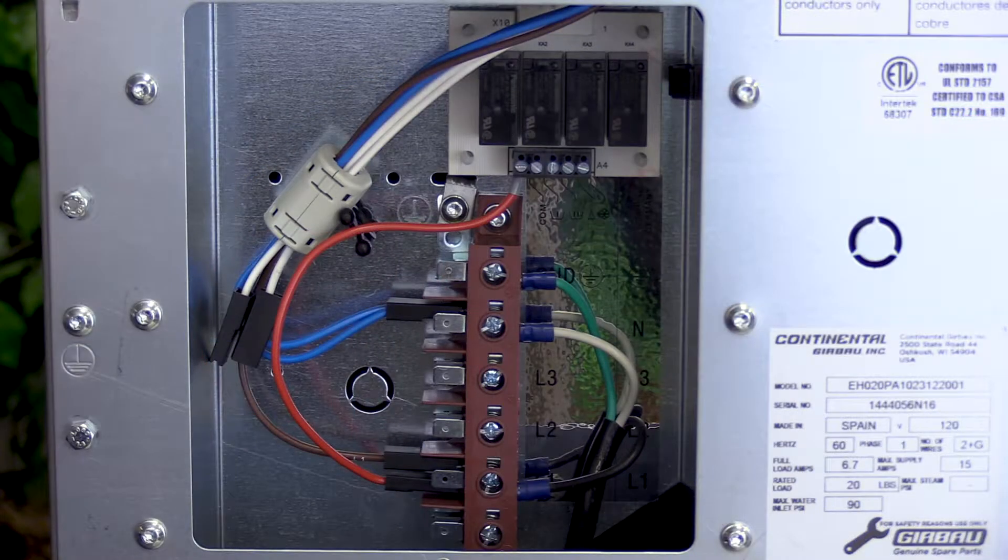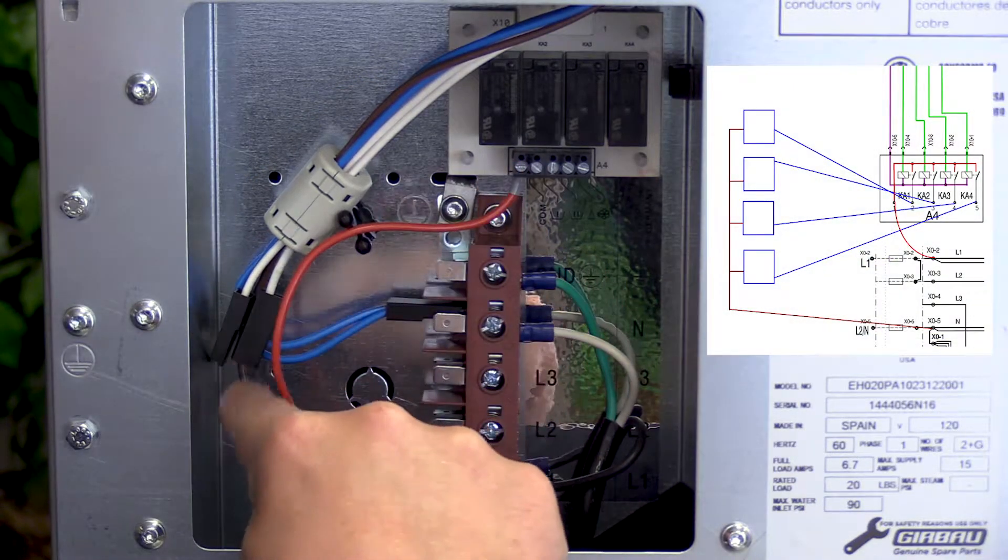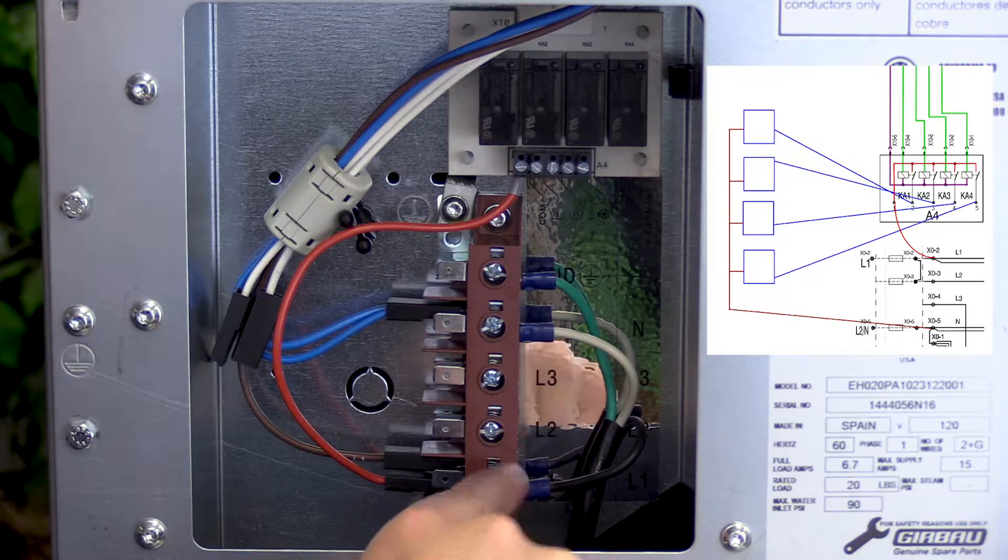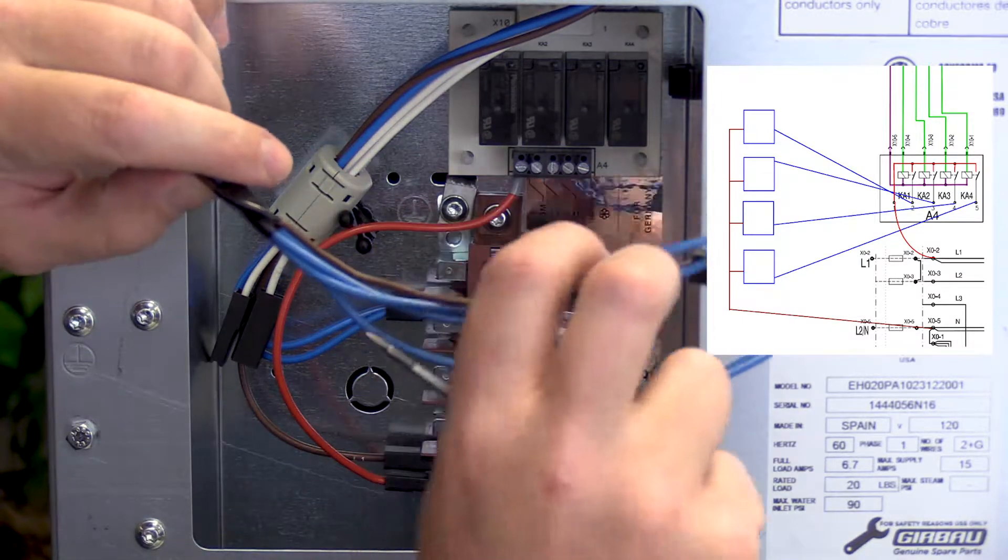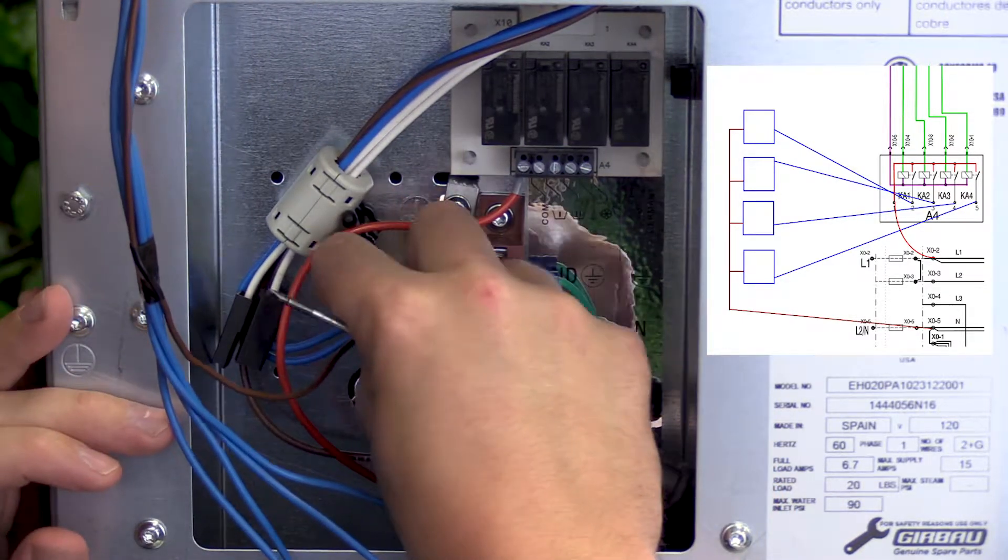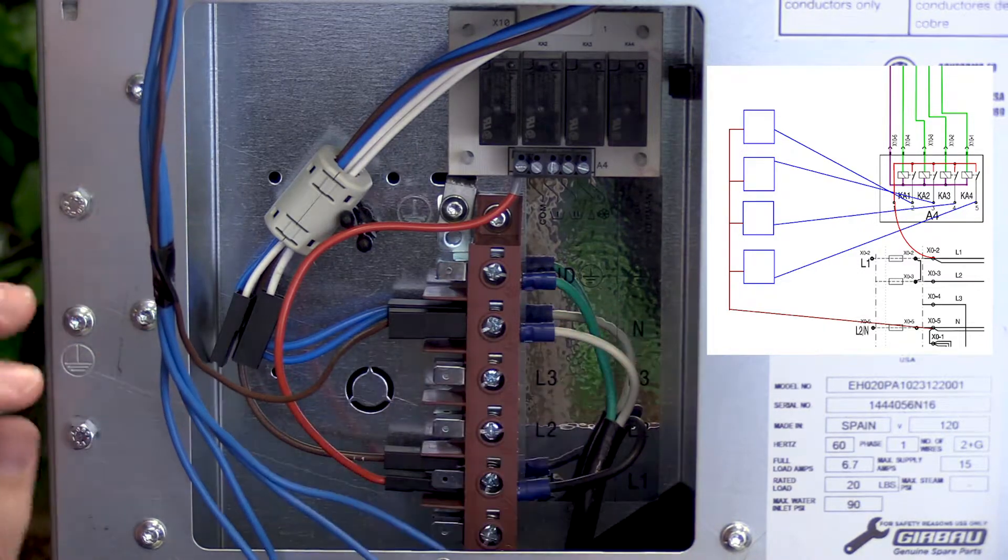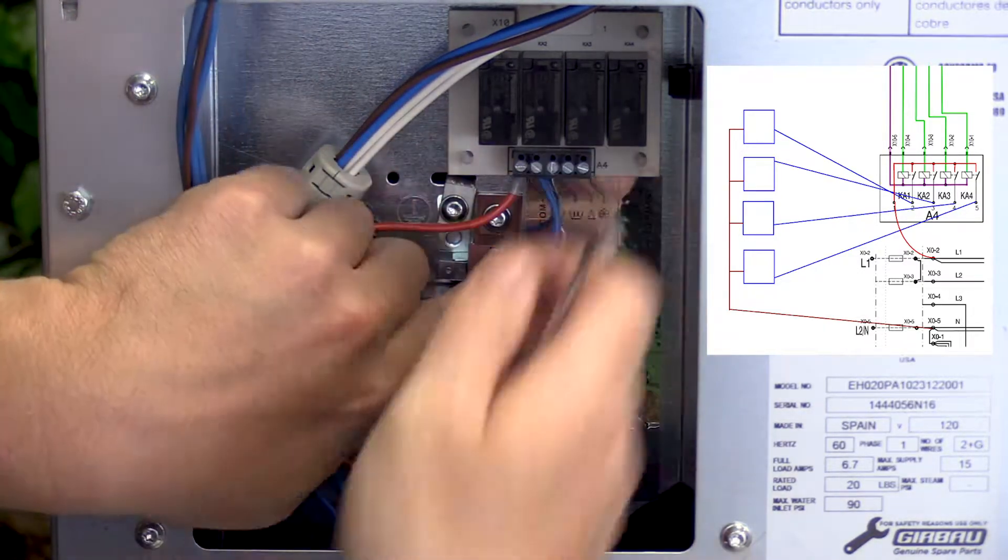Verify the jumper wire is connected on L1 from the input power terminal block to the power common on the external chemical terminal block. This will provide 120 volts AC to the dry contacts of the washer.